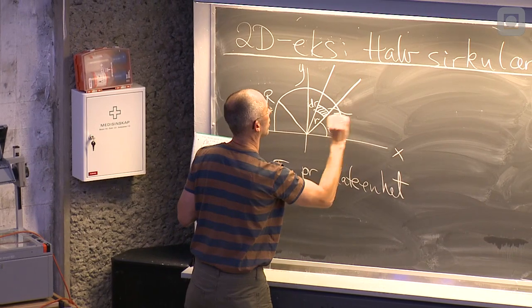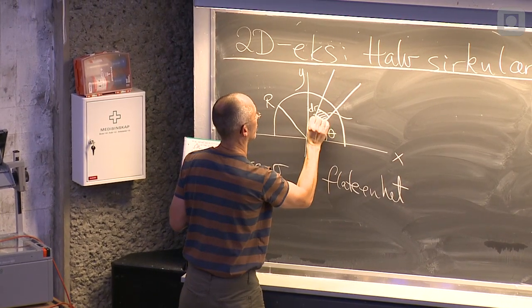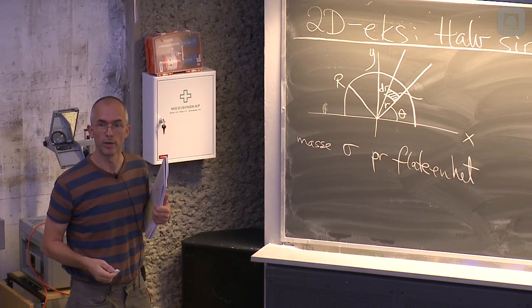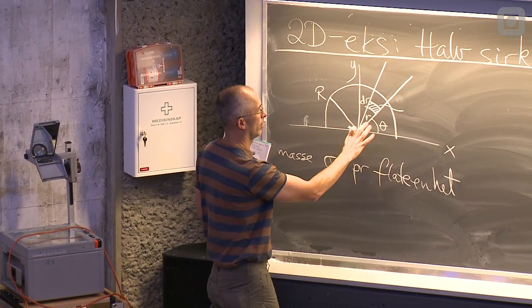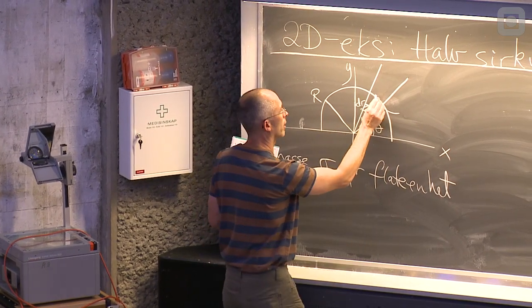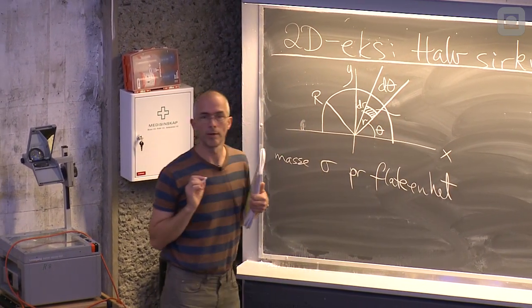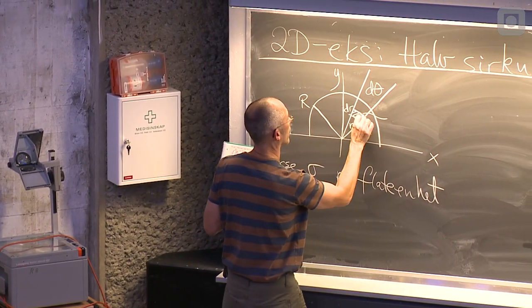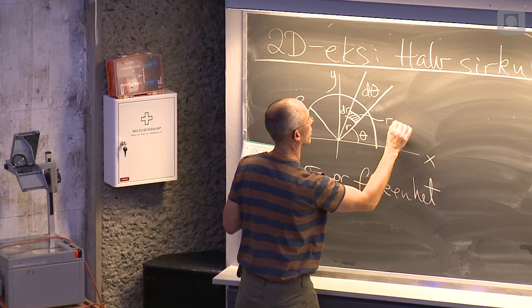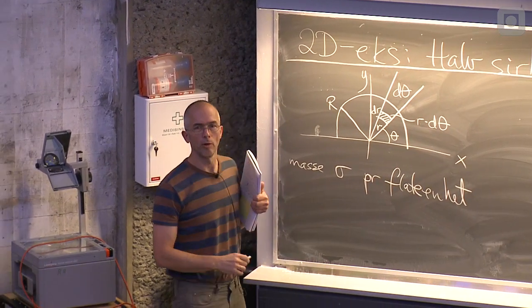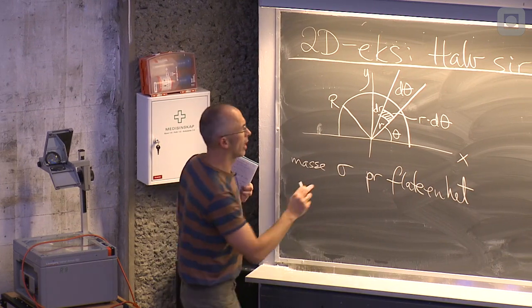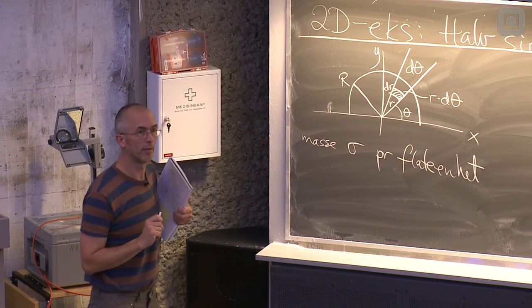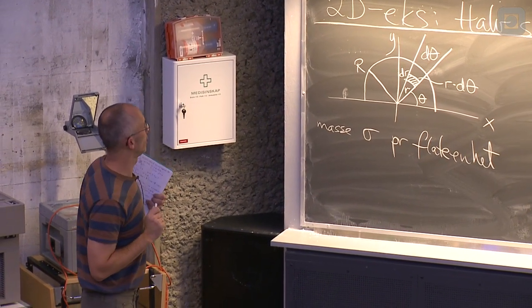Og så har jeg en buelengde der. Egentlig den da, men de to er for alle praktiske formål like lange. Og det er buelengden, det er radien gange vinkelen. Og det her er den lille vinkelen d theta, som jeg også hadde i det forrige eksempelet. Så lengden av den, den er r gange d theta. Ja, da vil noen si nei, den er egentlig r pluss dr gange d theta. Men dr gange d theta, det er lite. Det er så lite at det kaster vi bort.